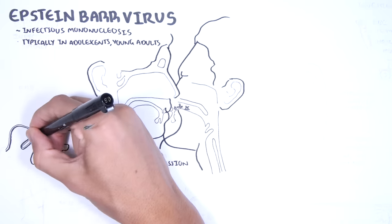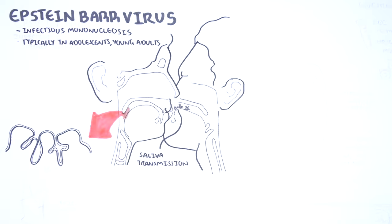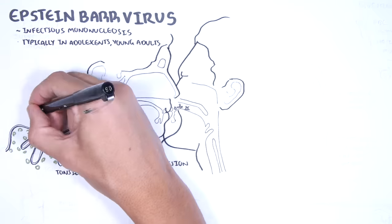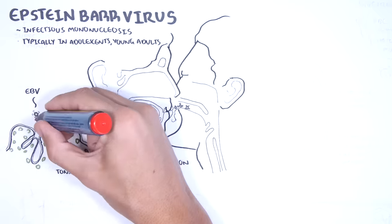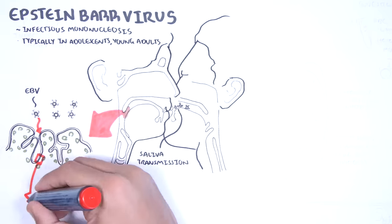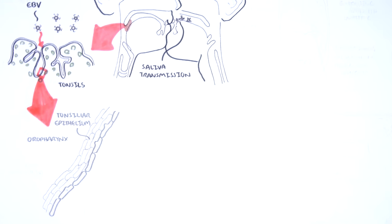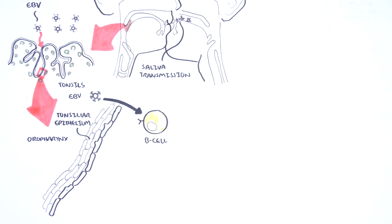The pathophysiology of the Epstein-Barr virus infection begins with saliva transmission, and the Epstein-Barr virus targets the tonsils, which is a lymphoid tissue made up of T cells and B cells. In the tonsils, the Epstein-Barr virus targets B cells and the tonsillar epithelial cells. This is called the Epstein-Barr virus primary infection, and this is usually asymptomatic.